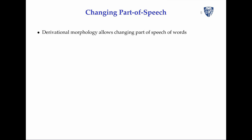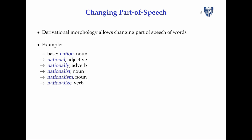Words have a part of speech — nouns, verbs, and adjectives — but you can turn nouns into verbs and verbs into adjectives. For example, the noun 'nation' becomes the adjective 'national', the adverb 'nationally', another noun 'nationalist', the ideological noun 'nationalism', and the verb 'nationalize'. It's a creative process, and it changes the part of speech.